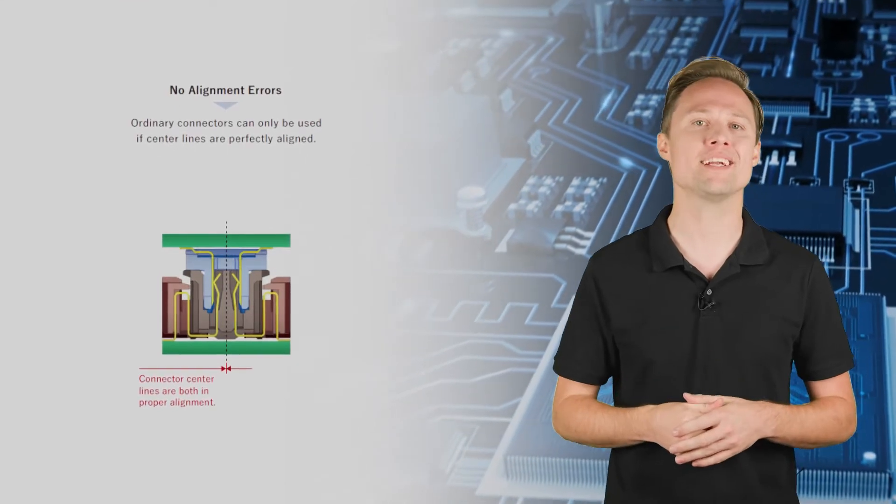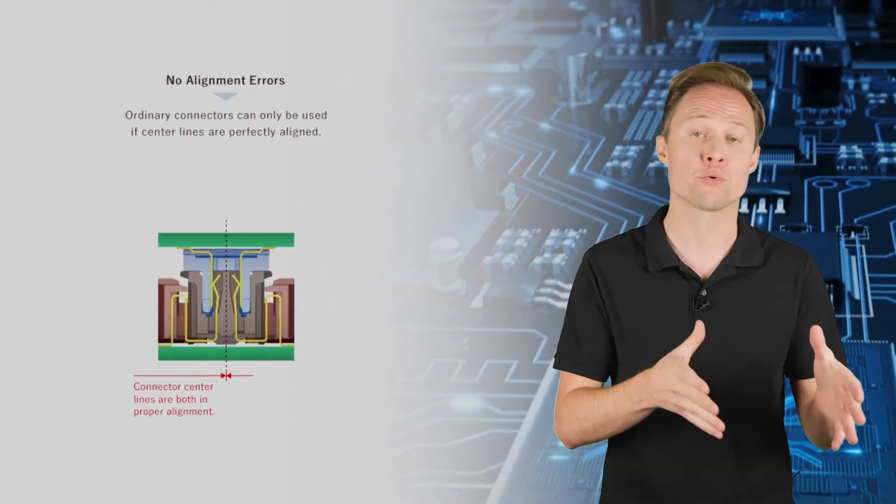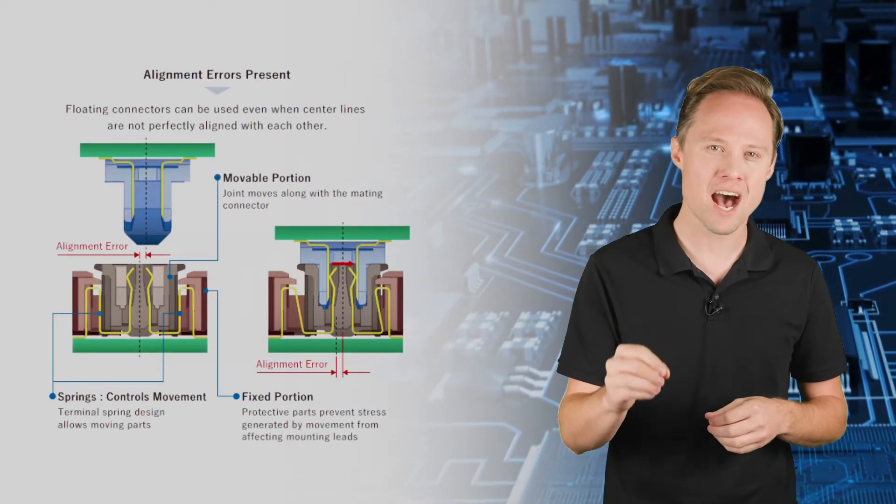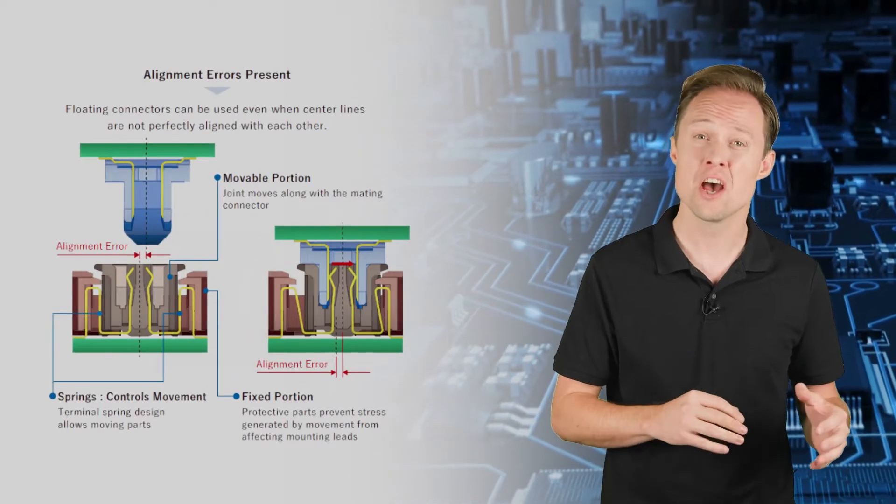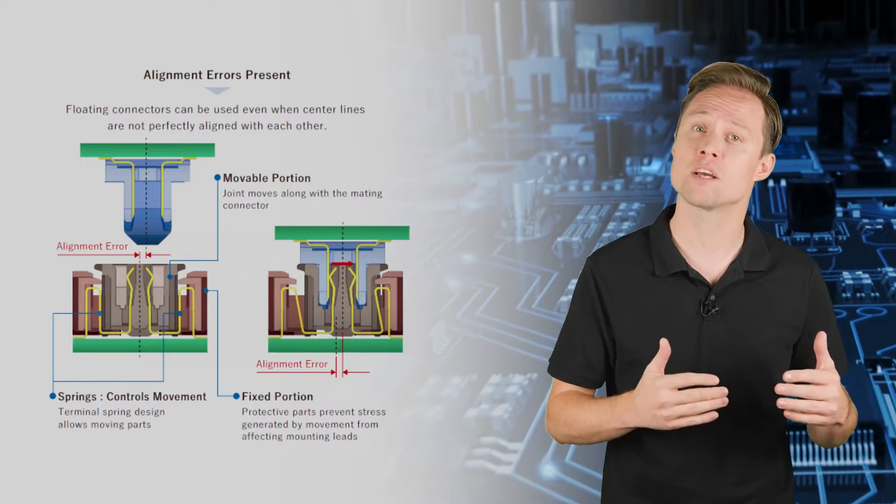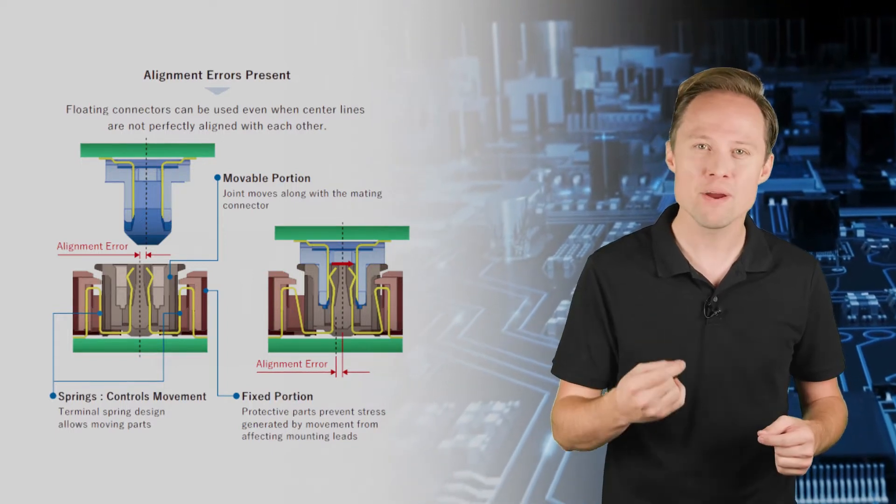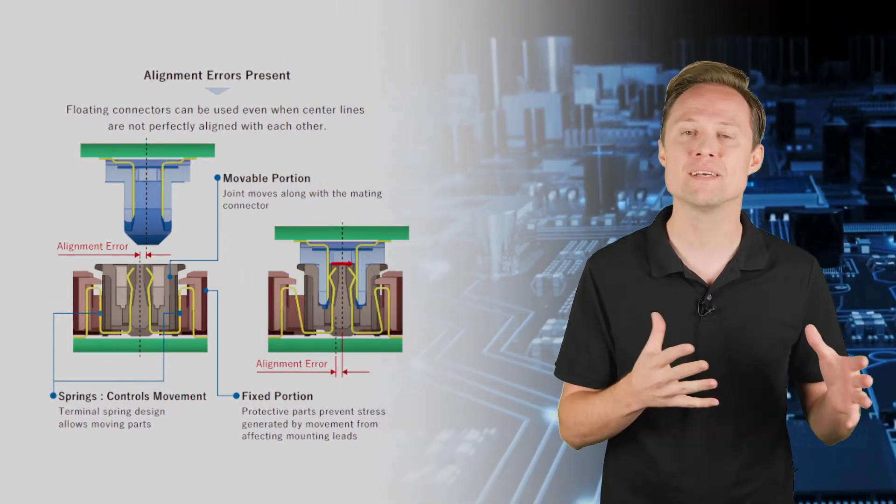Traditional connectors can only be mated if the centers of both the header and the receptacle are aligned properly. The floating design methodology behind the FX27 edge connectors offers a degree of play between the contacts during mating, allowing the connector to absorb any misalignment errors.